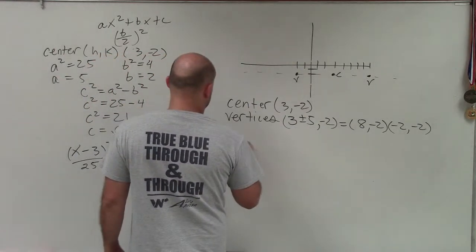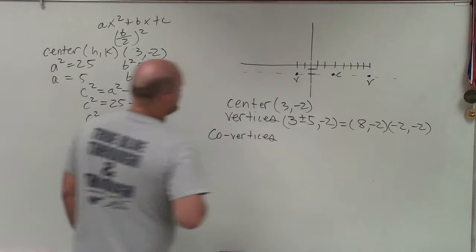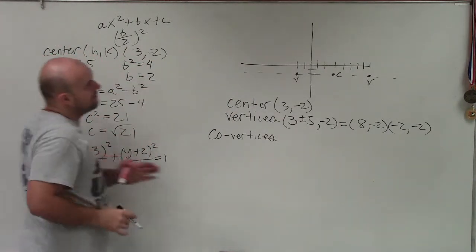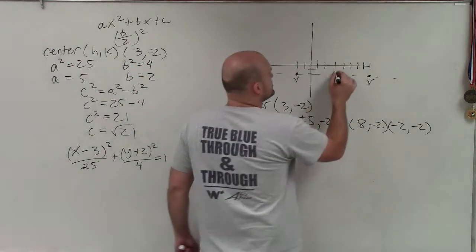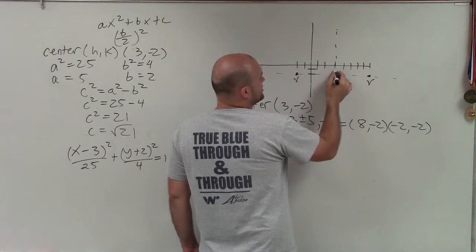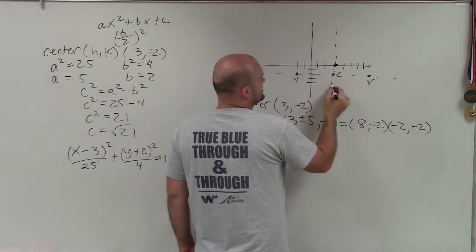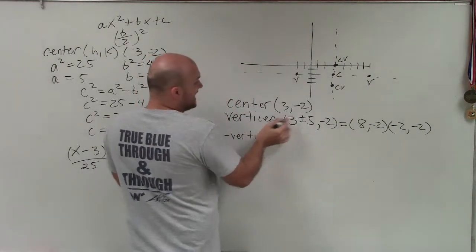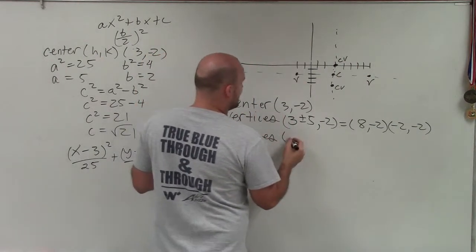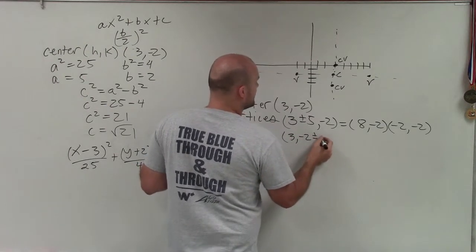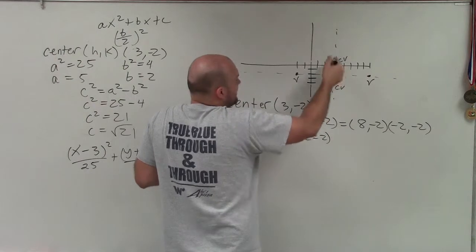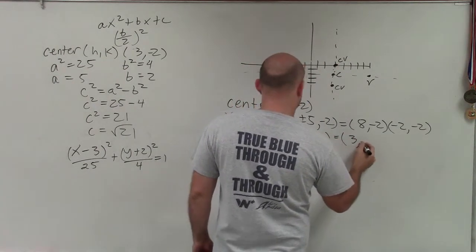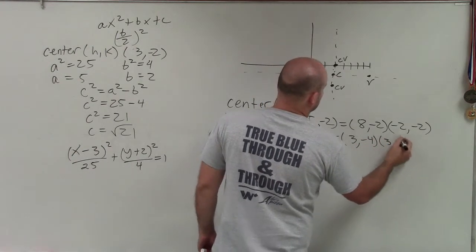Now let's do the co-vertices. Co-vertices are a distance of b from the center, and b is 2. The co-vertices lie on the minor axis, which is perpendicular to our major axis. So I go up 2 and down 2 from the center. Adding and subtracting 2 from the y coordinate of the center gives co-vertices at (3, negative 4) and (3, 0).